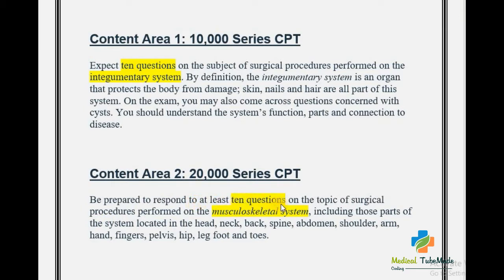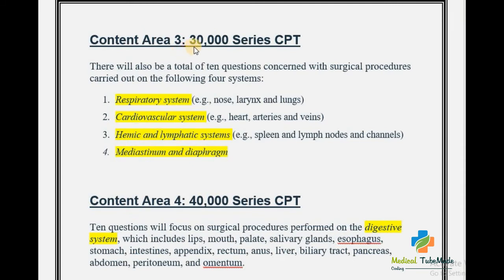Content Area 2 covers the 20,000 series of the CPT book. Be prepared to respond to at least 10 questions on the topic of surgical procedures performed on the musculoskeletal system, including parts of the system located in the head, neck, back, spine, abdomen, shoulder, arm, hand, finger, pelvis, hip, leg, foot, and toes. All surgical procedure CPT codes for the musculoskeletal system come from the 20,000 series of the CPT book.